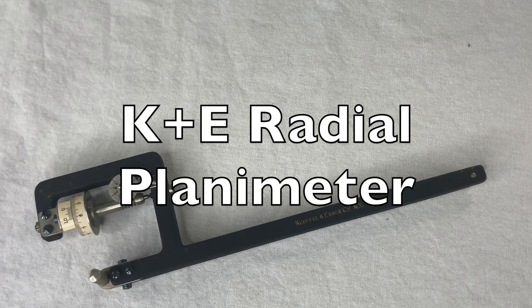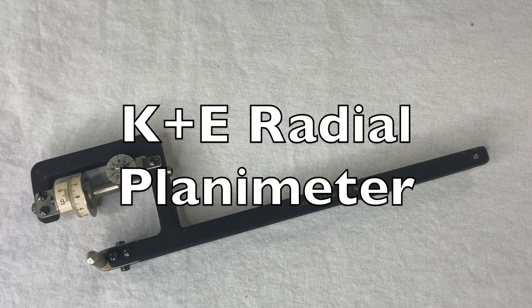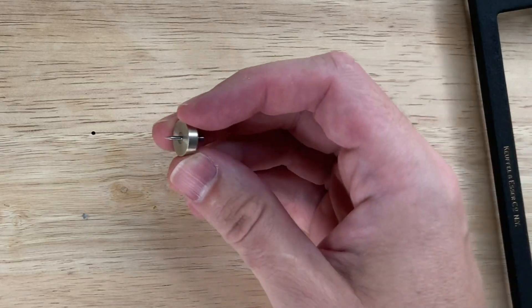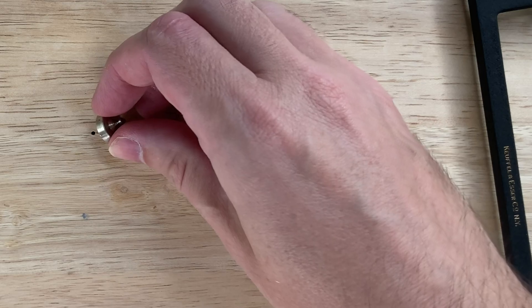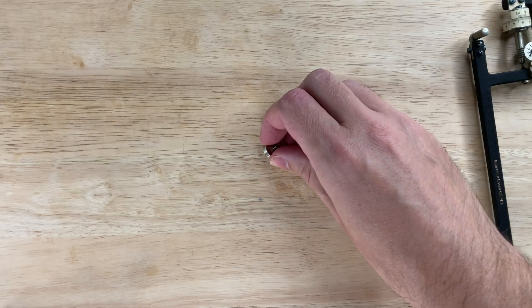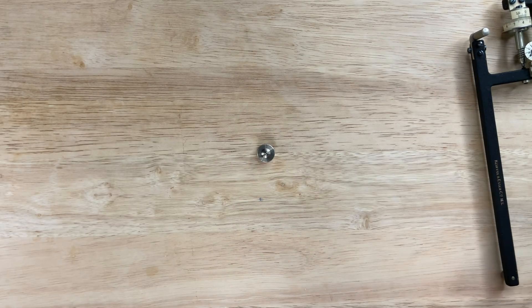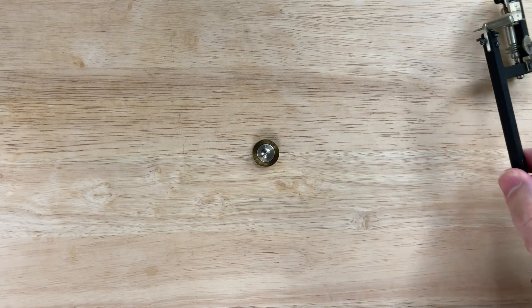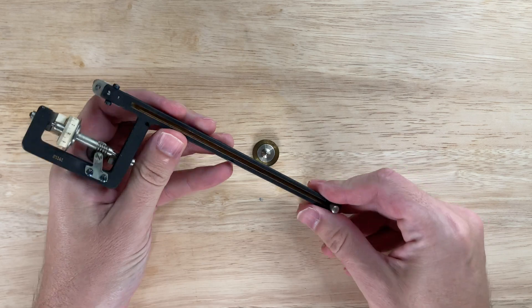This is a K&E Radial Planimeter made in 1920. It has this little part with a spike to hold it still on your table. Actually, you have to push it all the way in. Put this little belt on top of it to keep it stable. And then the real business sits right on top of that.